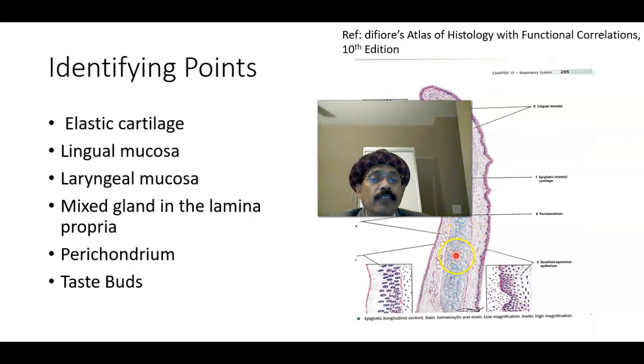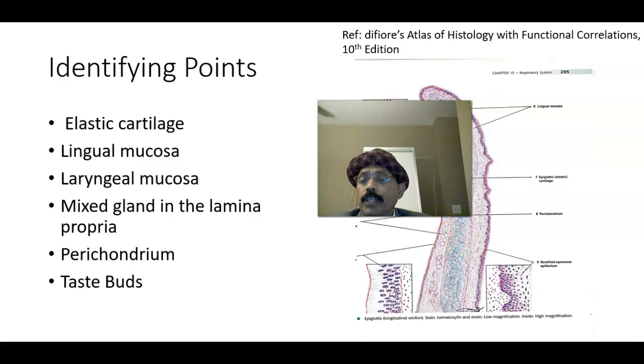The elastic fibers are present inside the substance of the elastic cartilage, but they are also connected to the perichondrium.